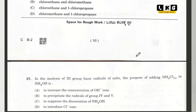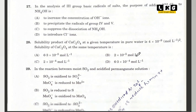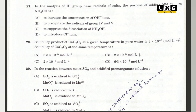Question number 27: in the analysis of group 3 basic radicals of salts, the purpose of adding NH4Cl is option C — to suppress the dissociation of NH4OH. This is the common ion effect. Question number 28: solubility product of this compound at a given temperature in pure water is given; after solving, the solubility at the same temperature gives option A as the correct answer.